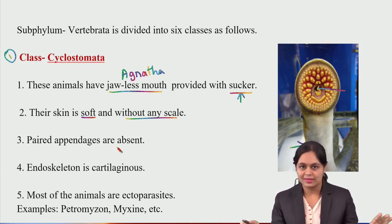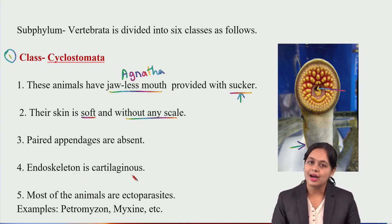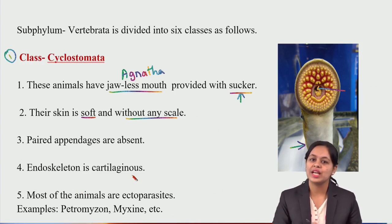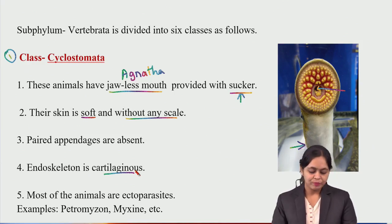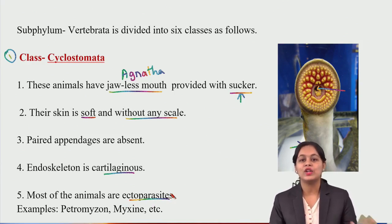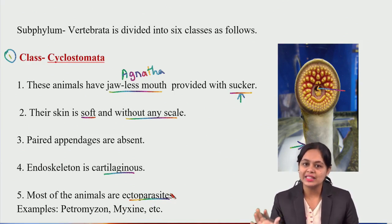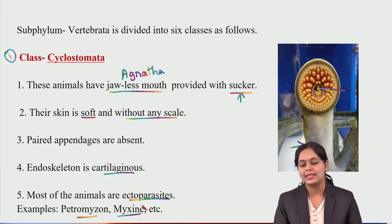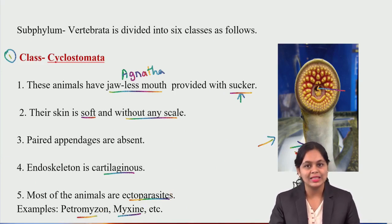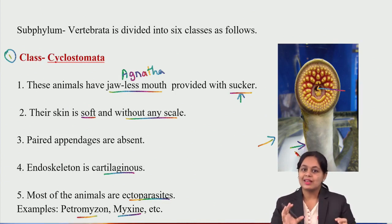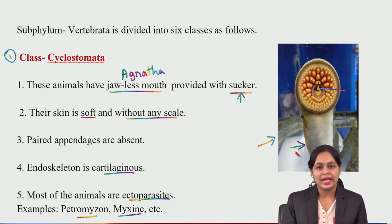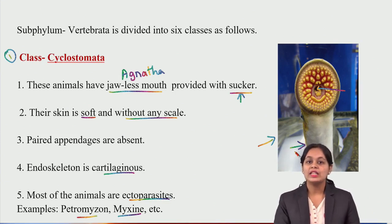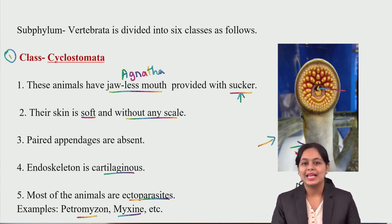Appendages are absent in Cyclostomata. Endoskeleton is cartilaginous — no bone formation, only cartilage is present. Most of these animals are ectoparasites — they live on the outside of other organisms. Examples are Petromyzon and Myxine. Petromyzon has a single hole visible — it is jawless and feeds by sucking. Body has no scales — soft body. Appendages are absent. Cartilaginous endoskeleton.